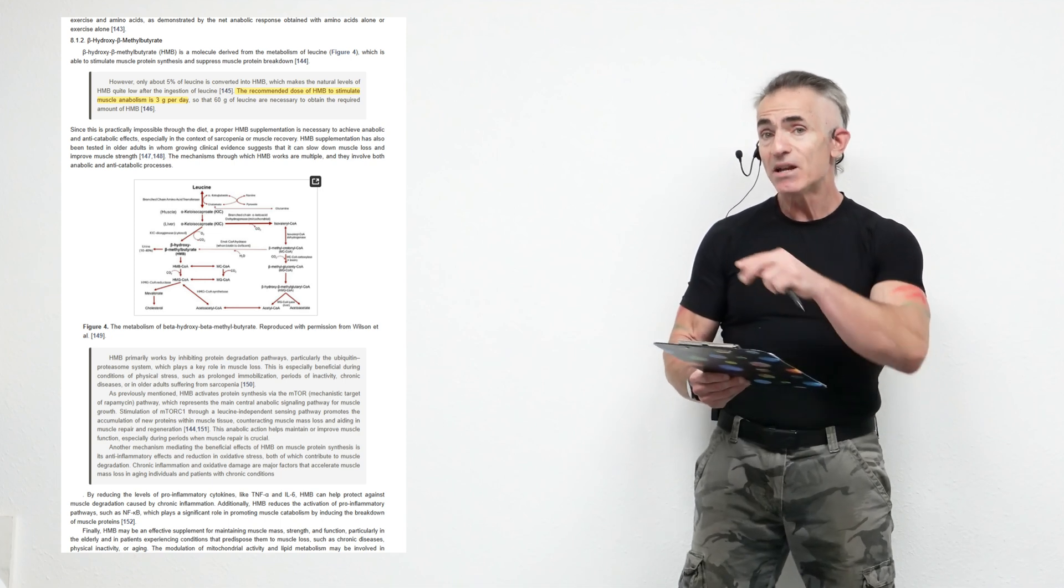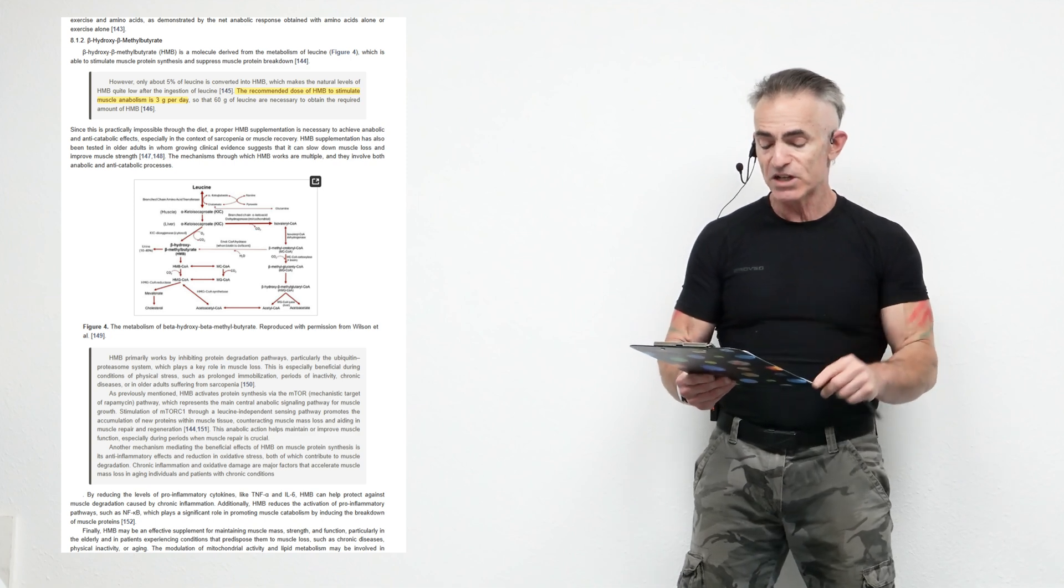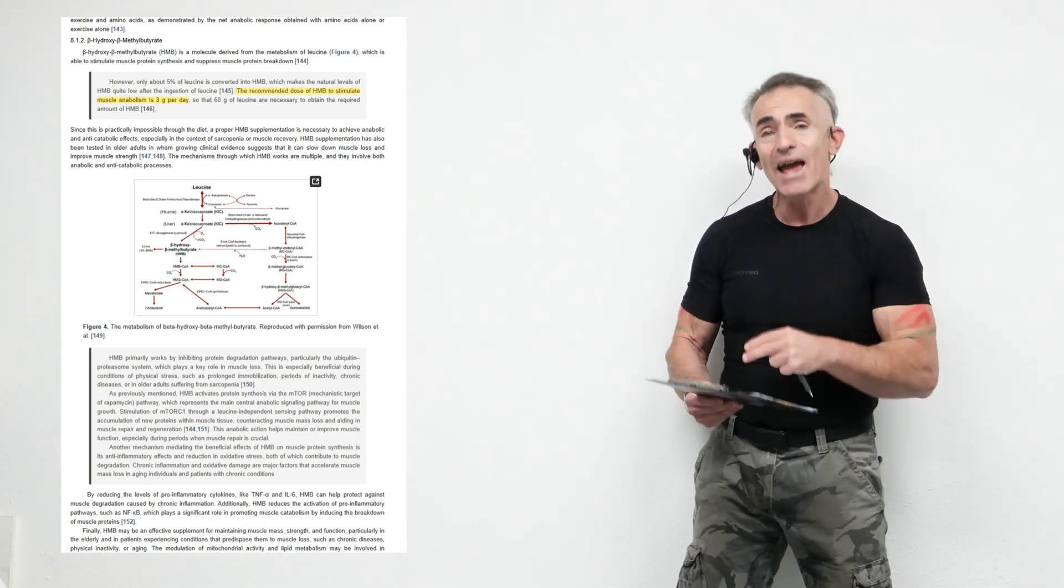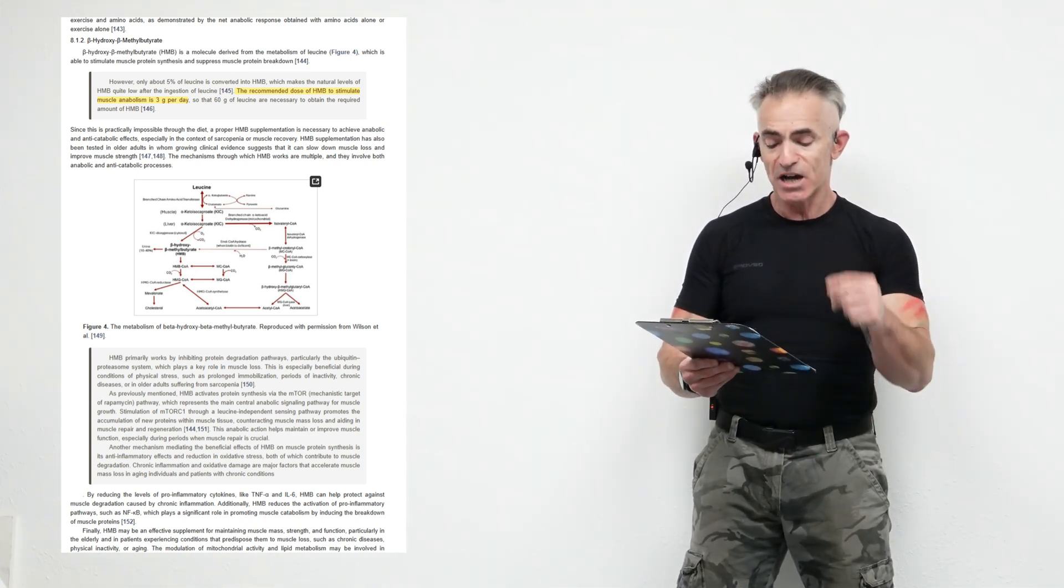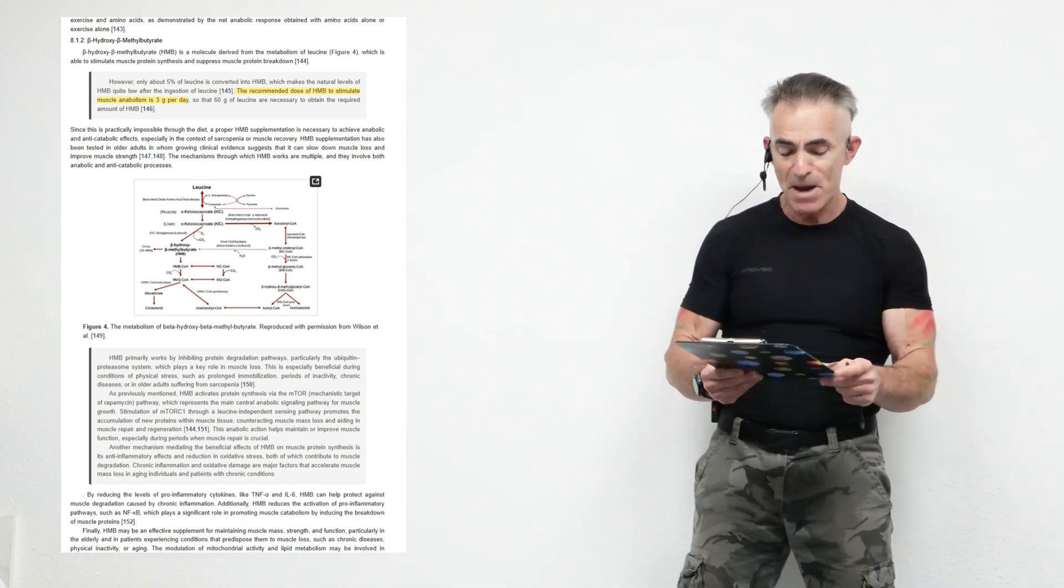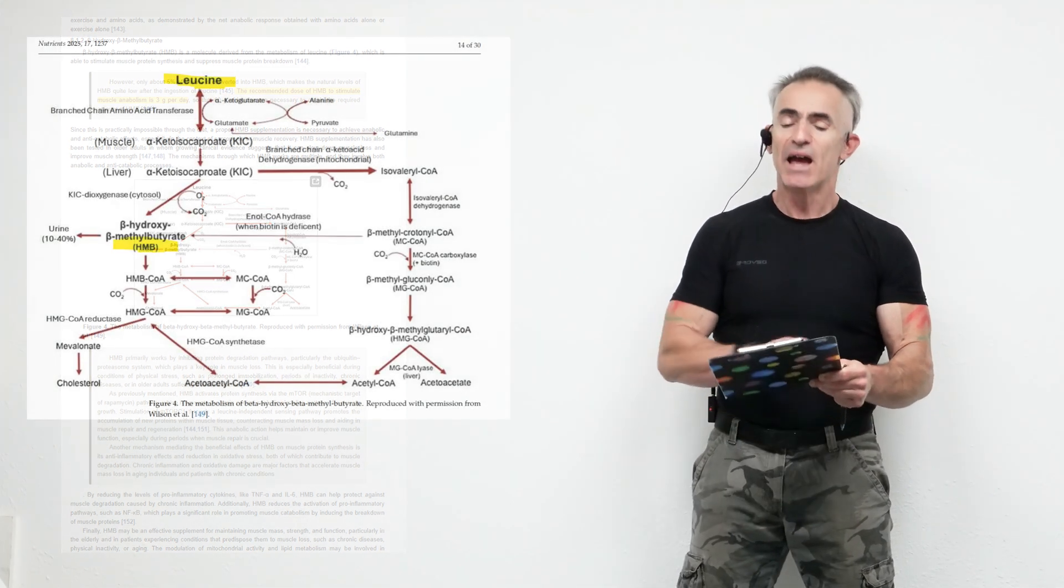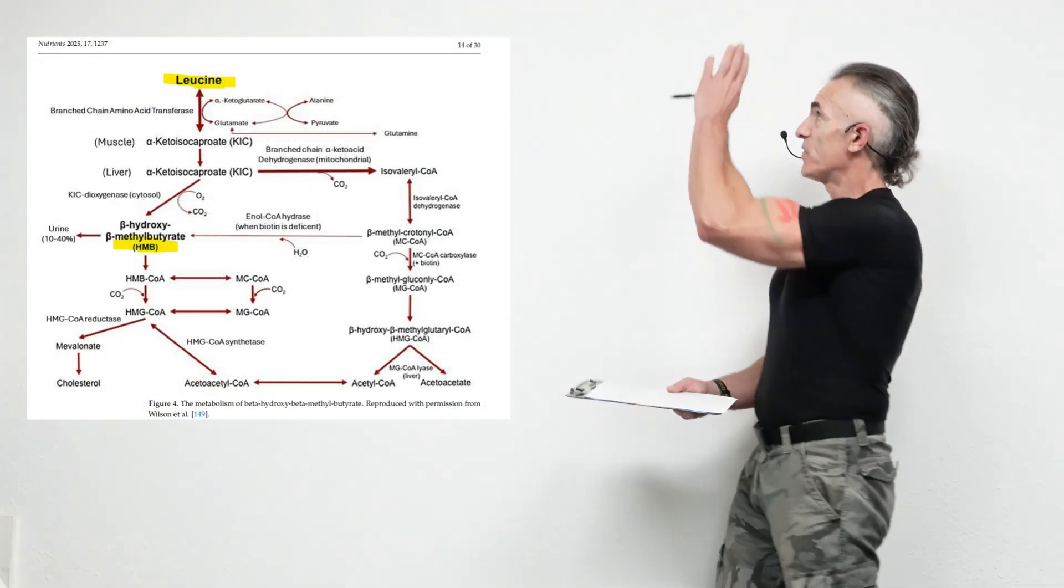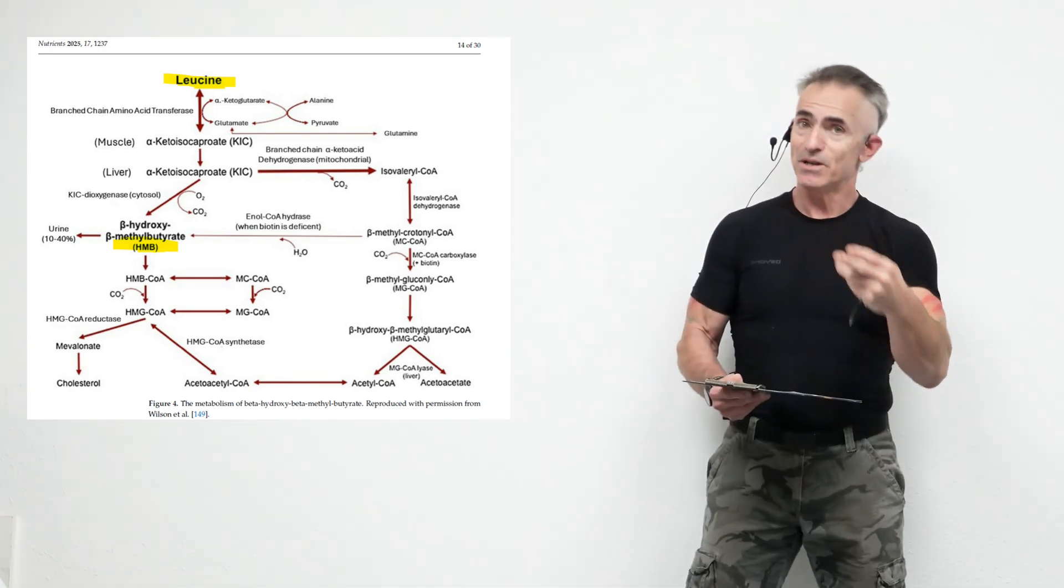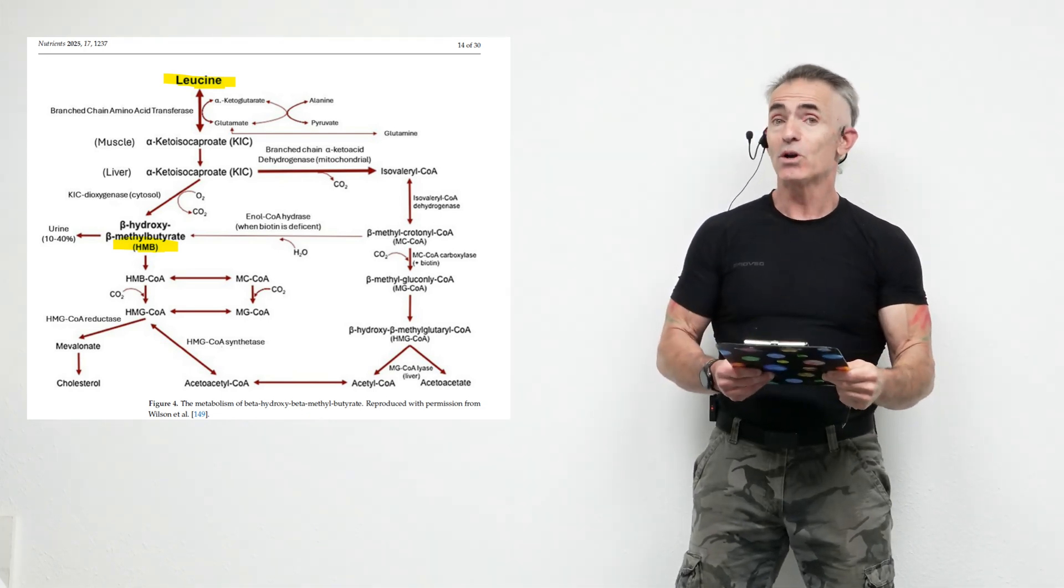Here is a really interesting tidbit in regard to HMB that a lot of people, including myself, were not aware of. Another mechanism mediating the beneficial effects of HMB on muscle protein synthesis is its anti-inflammatory effects. Yes, anti-inflammatory effects, and reduction in oxidative stress, both of which contribute to muscle degradation. Chronic inflammation and oxidative damage are major factors that accelerate muscle mass loss in aging individuals and patients with chronic conditions. And just to see the graphic here, you can see leucine as far as the conversion to HMB. Not to reiterate too often, it looks like taking HMB by itself may be a quicker route to go.